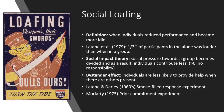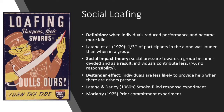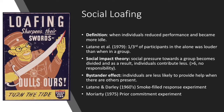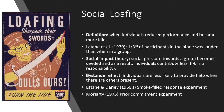Other examples of social impact theory include Moriarty's 1975 prior commitment experiment, in which when asking strangers to look after one's objects, 95% chased after the thief who stole the objects, as opposed to just 20% of strangers with no prior commitments. Prior commitments made responsibility more explicit.